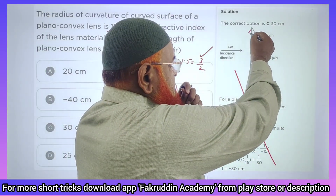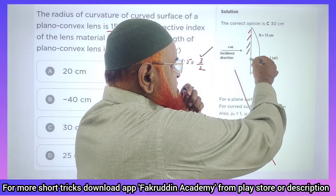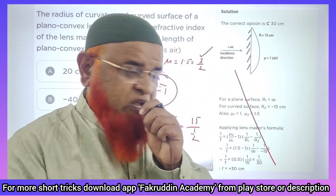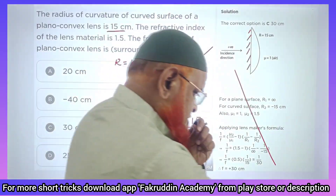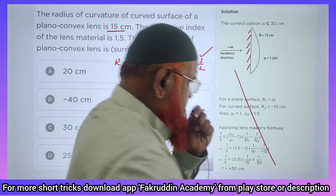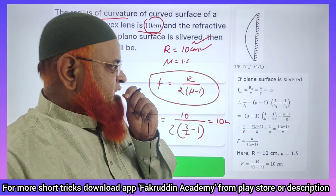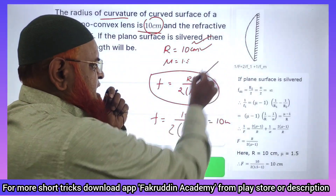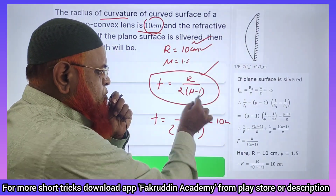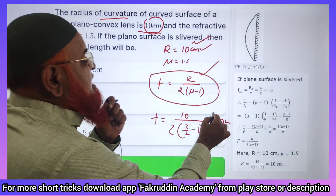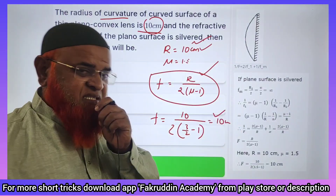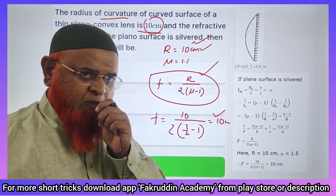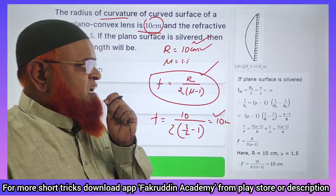Some students are asking: if it is a silvered lens — for example, if this part is silvered — then what is the answer? I have discussed this in the previous question also. If it is a silvered lens, your formula is R/(2μ-1), where you are getting an answer of 10 centimeters.